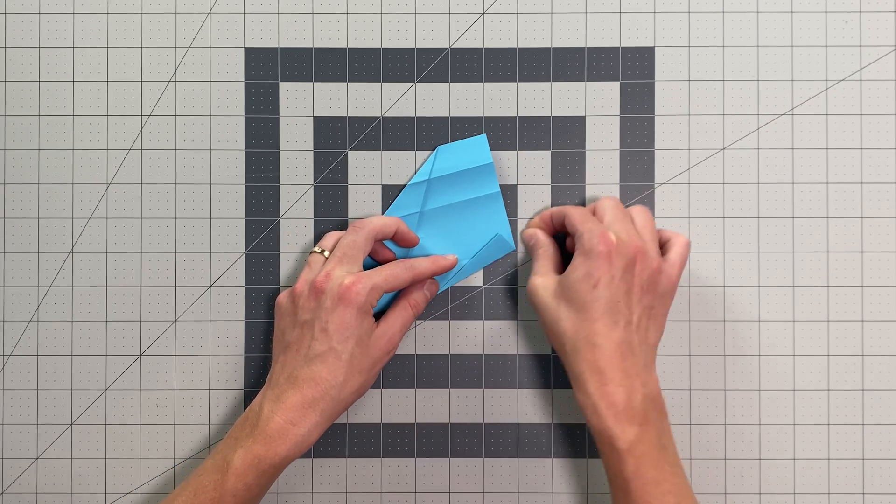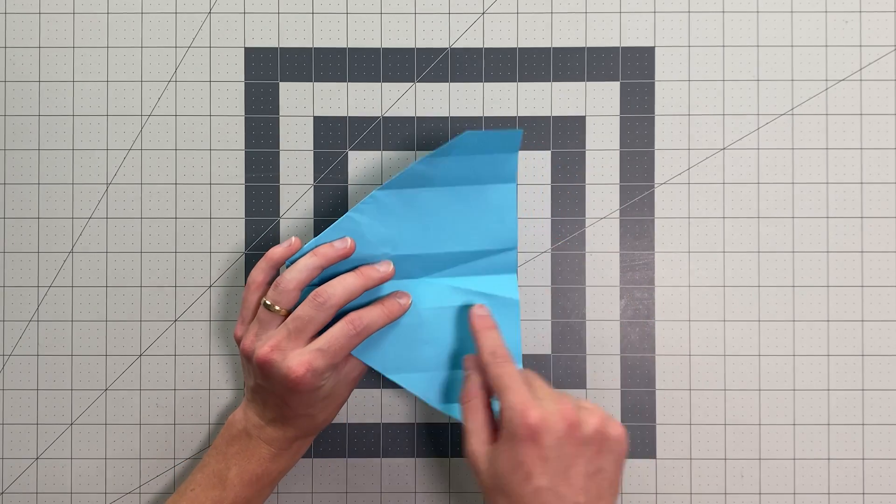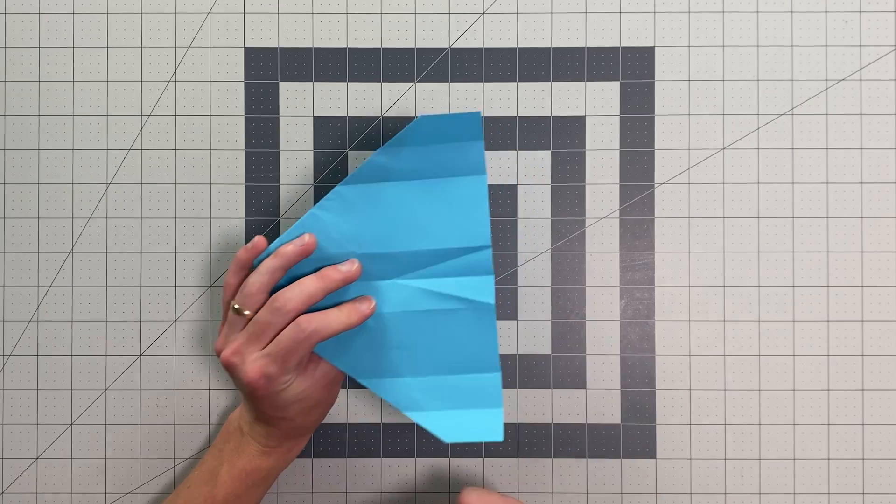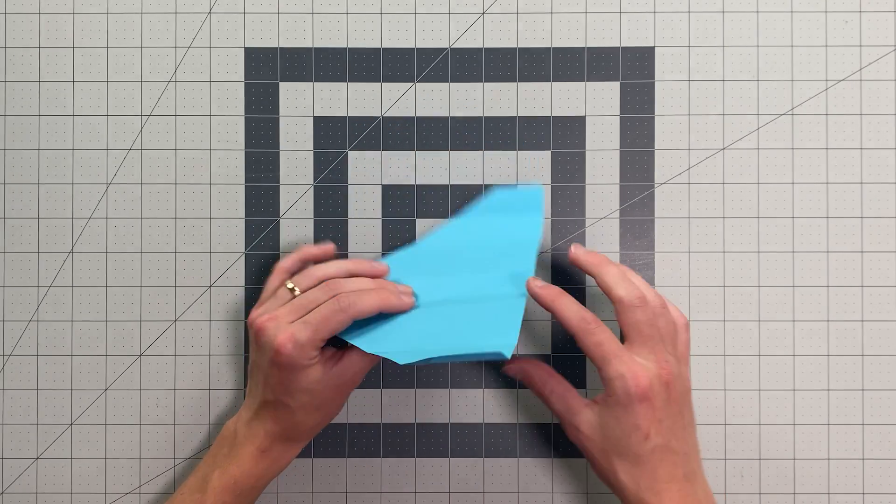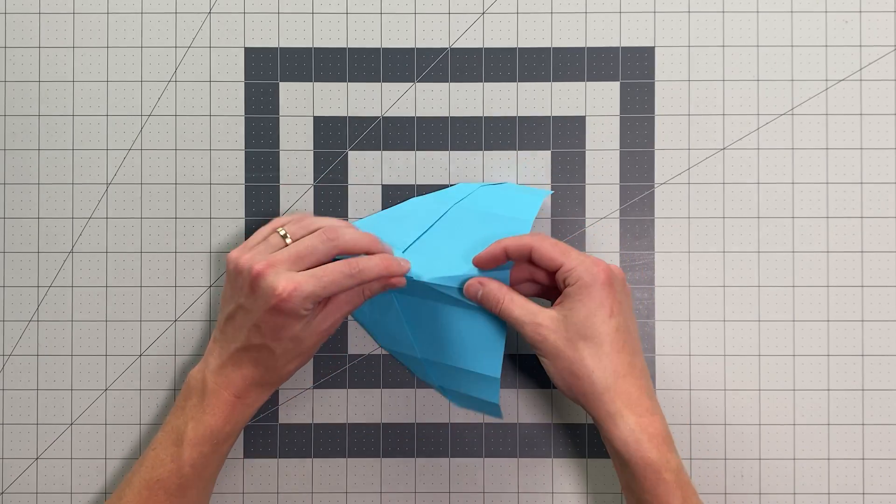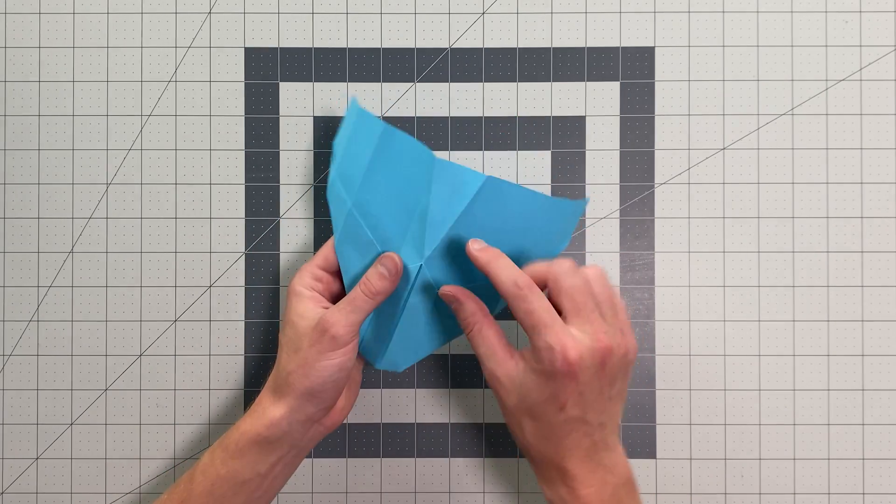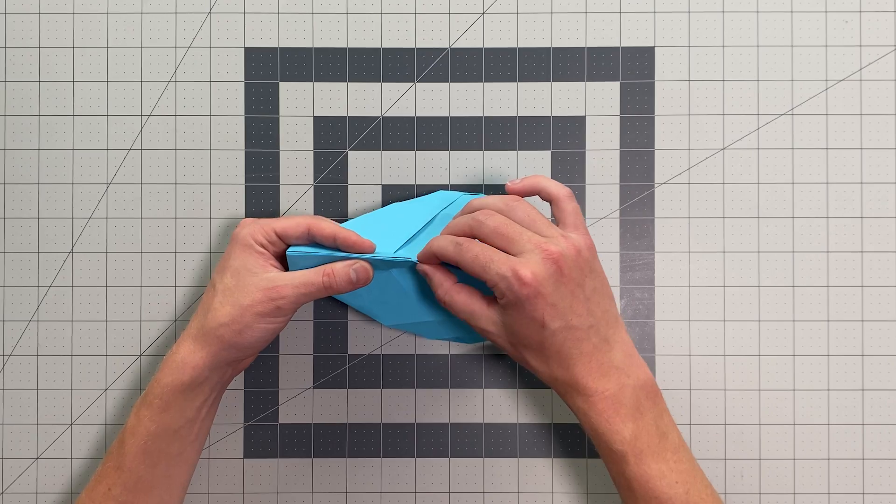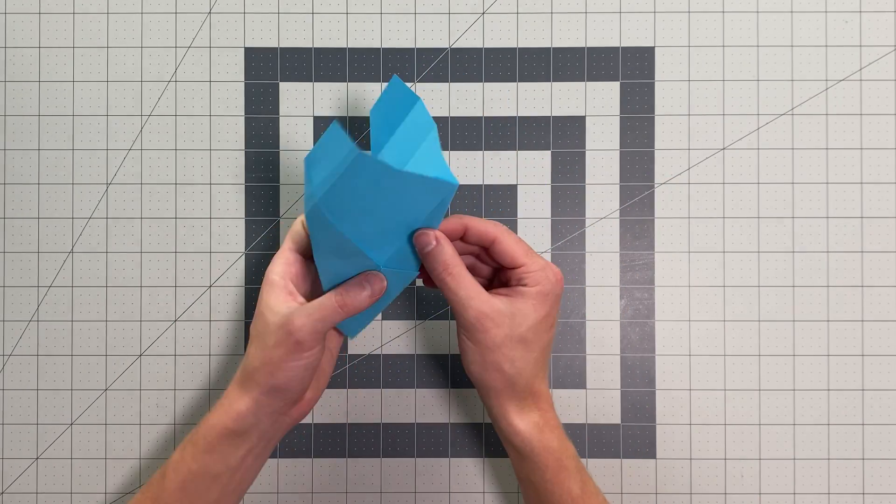And now in order to make that fin stick up on the other side, you can open this up. This crease here is going in the wrong direction. The one that's a valley fold from this perspective is great. You're going to have to reverse that crease there. And it can be a little tricky to do that, but you can see what I'm doing here. I'm basically pinching that crease. And now I'm ready to just push down on that and inside reverse fold the fin, which makes it poke up out the other side.